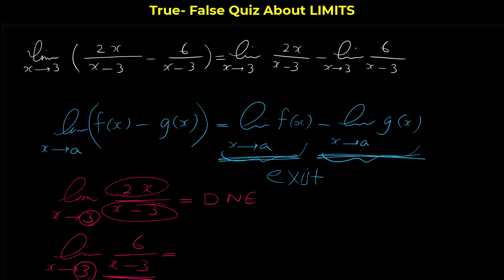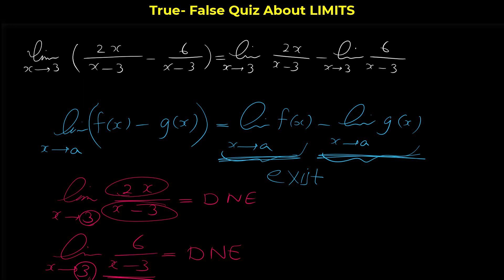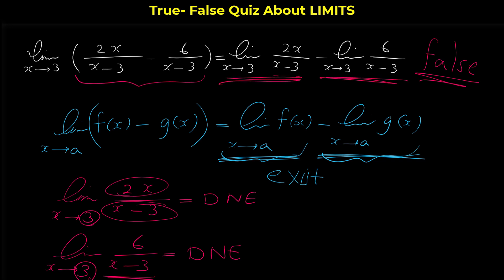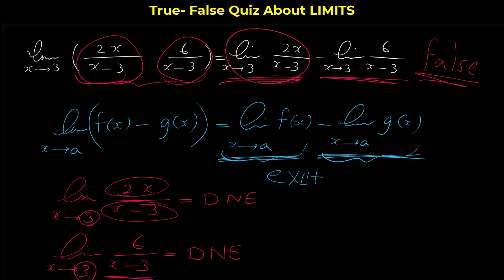So finally, this statement is false. We can separate a limit into two limits only if each of those limits exists, but here we showed that these limits do not exist, so this statement is false.